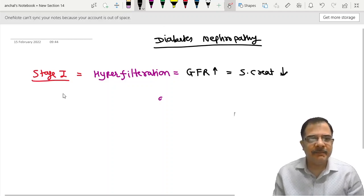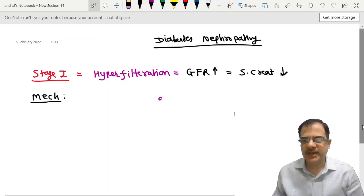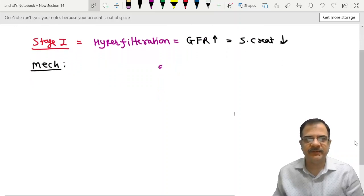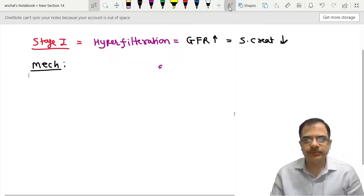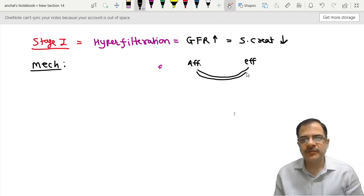But let's see what is the mechanism of hyperfiltration here. Very important mechanism. Some physiology points we should be aware of in the diabetes nephropathy phase. So when there is glucosuria, this is the glomerulus, this is the afferent arteriole and this is the efferent arteriole.